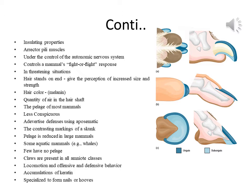Hair color depends on the amount of melanin pigment deposited in it and the quantity of air in the hair shaft. The pelage of most mammals is dark from the upper side and lighter underneath. This pattern makes them less conspicuous under most conditions.